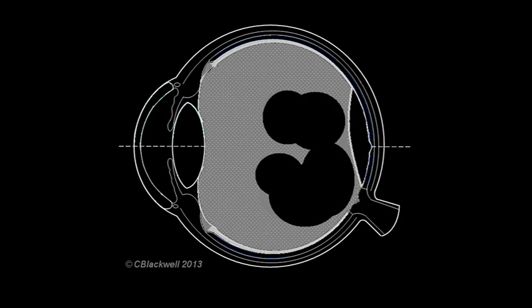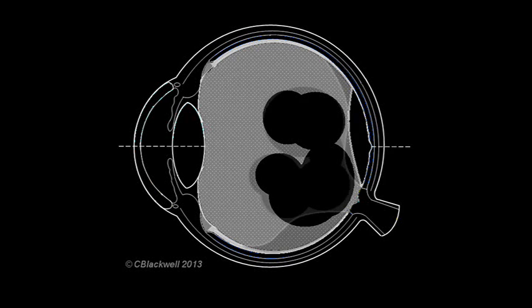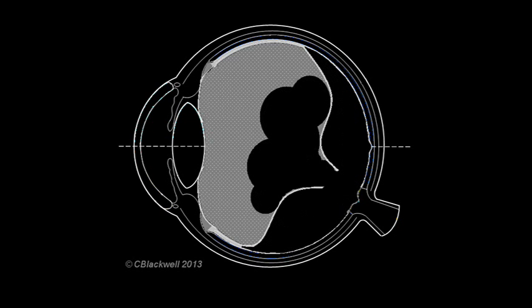If the foveal attachment releases, then you get this lens shape. Further separation leaves the last vitreous attached around the optic nerve. And finally, the vitreous pulls away from the optic nerve.